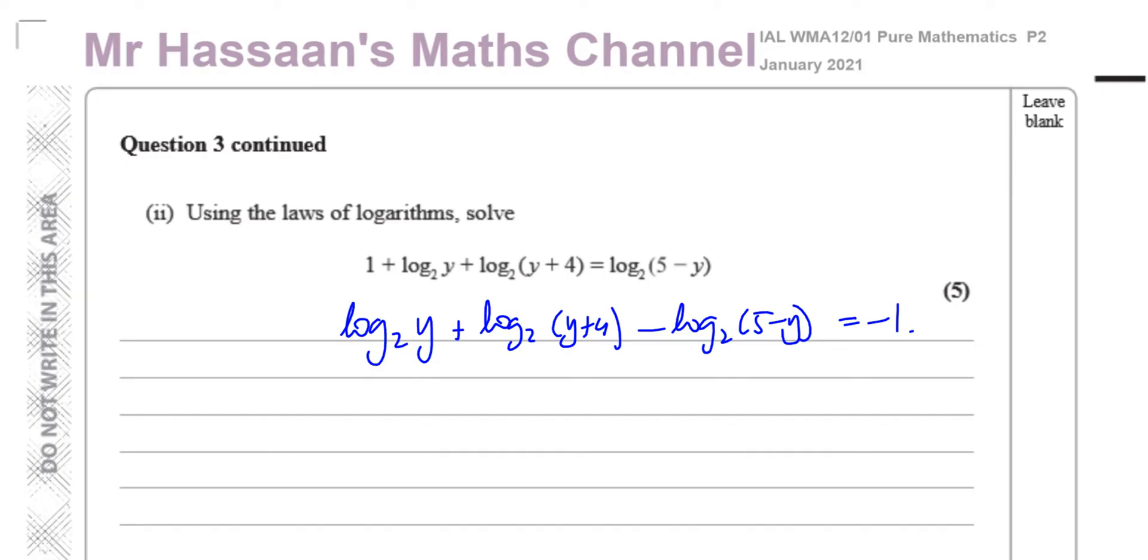I could have also called this log to the base 2, 2 if I wanted to and combined them all together. But I can do this. So now I've got here a combination. I can combine these two by multiplication. So I have log to the base 2 of y times y plus 4. And then I can combine these with that by division. So this is divided by 5 minus y. I've used the law of logarithms that the log to the base a, b plus log to the same base a, c is equal to the log to the base a of b times c. And if I have a minus there, it's b over c. So I use both of those laws here, and that's equal to minus 1.